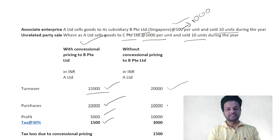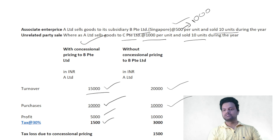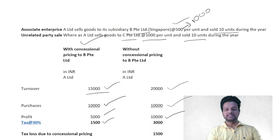Without concessional pricing to BPT Limited — meaning A Limited sells to both B and C at 1,000 per unit — the turnover is 20,000 because total 20 units at 1,000 per unit equals 20,000. Purchases remain 10,000, so profit is 10,000 and tax paid is 3,000.